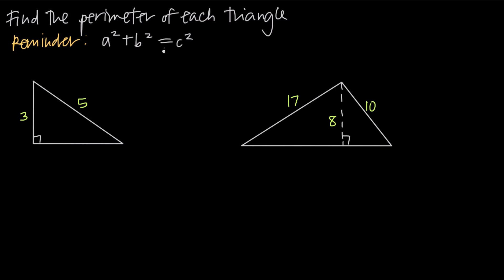We have a couple examples here of triangles and we're going to have to use the Pythagorean theorem to find one edge of the triangle that we don't know. Remember that you can only use the Pythagorean theorem when you're dealing with a right triangle, which is a triangle that includes a 90 degree angle.